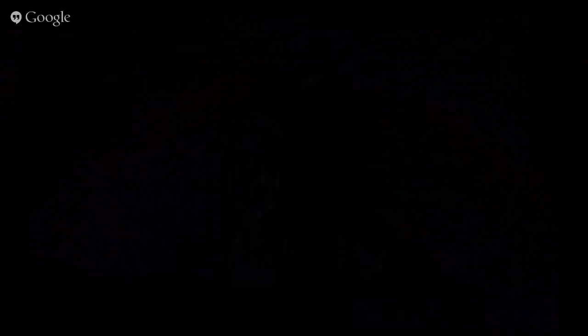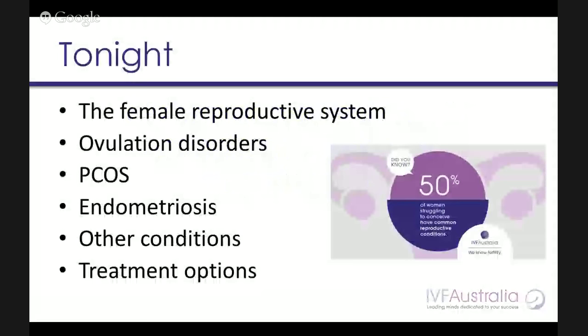I'm going to be talking about some of the conditions that affect your fertility and there'll be a chance for you to ask me some questions. You could even submit your questions live during this process or towards the end of the program. Tonight's topics are going to be the female reproductive system, ovulation disorders, polycystic ovarian syndrome, endometriosis, and other conditions that may be slowing down your chances of conceiving. We'll briefly touch on some treatment options as well.